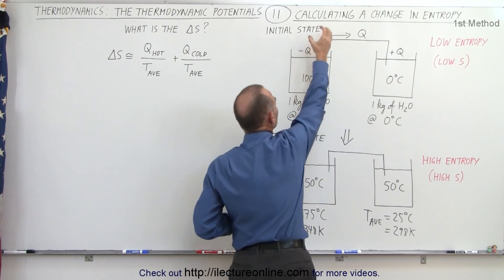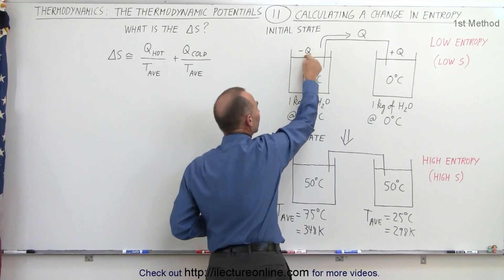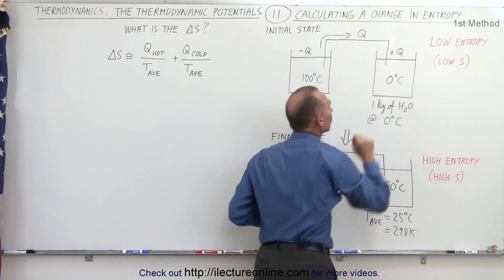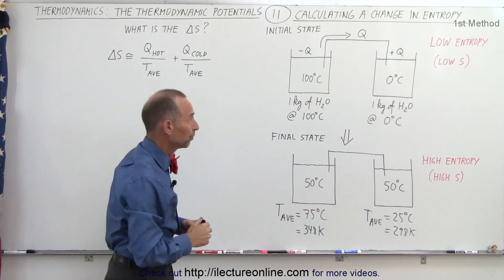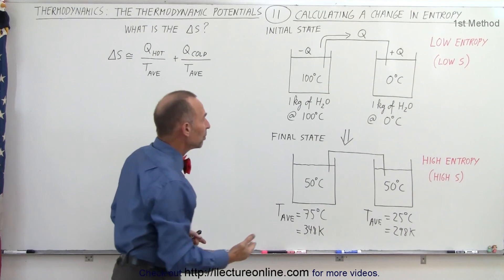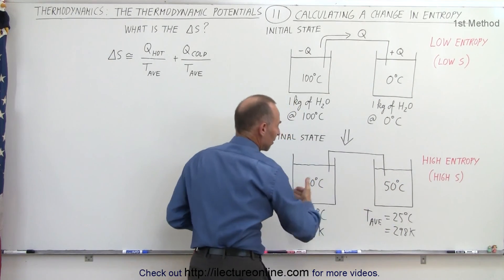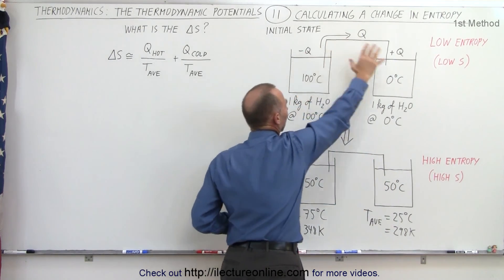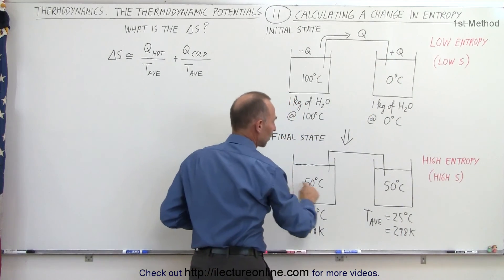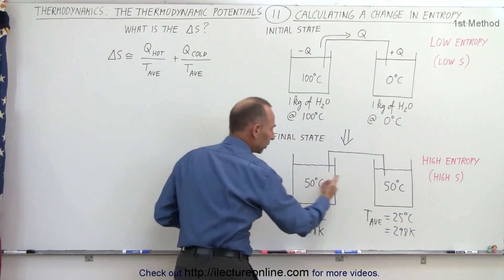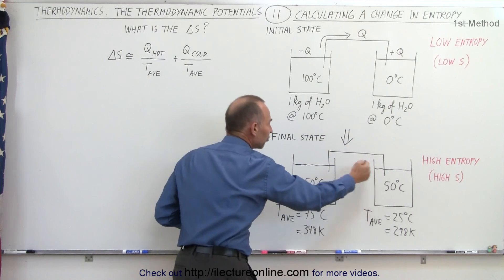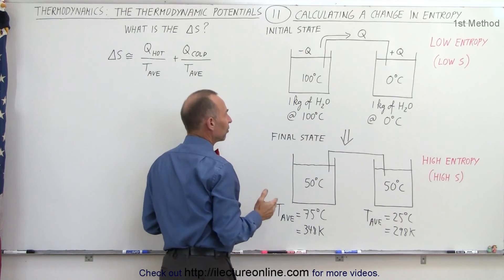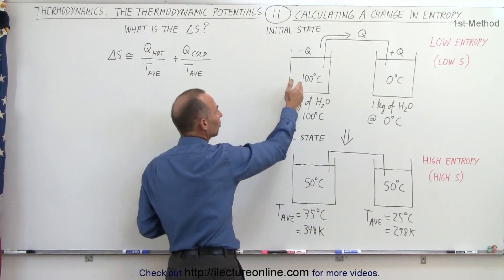When heat is extracted out of the hot container that's negative q; when heat is added to the cold container that is positive q by definition. The final state will be when both containers are at the same temperature — when all the excess heat ended up in the other container, they're now at thermal equilibrium and heat flow stops. That's the final state; this was the initial state.